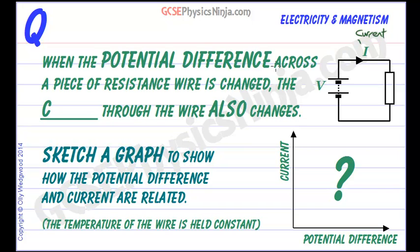When the potential difference across a piece of resistance wire is changed, the current through the wire also changes.